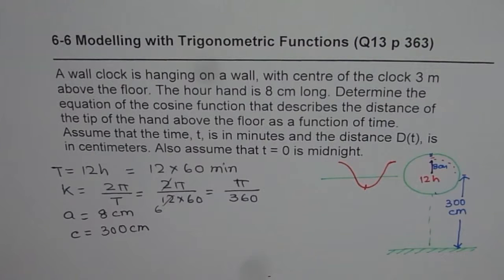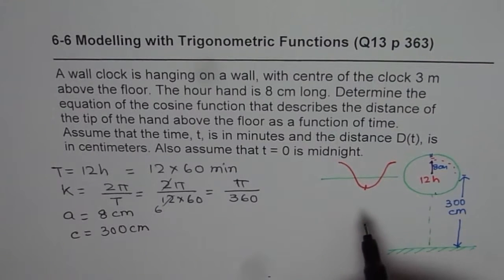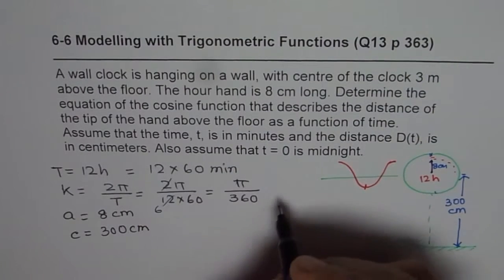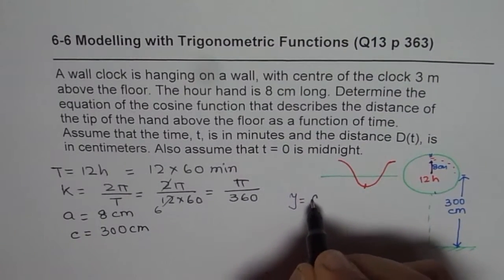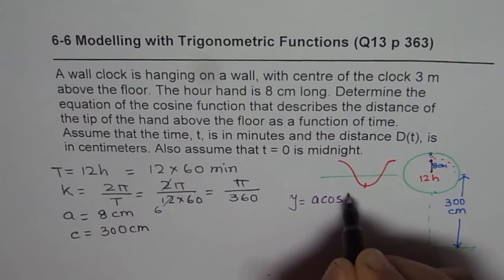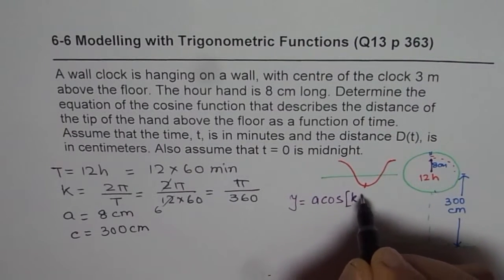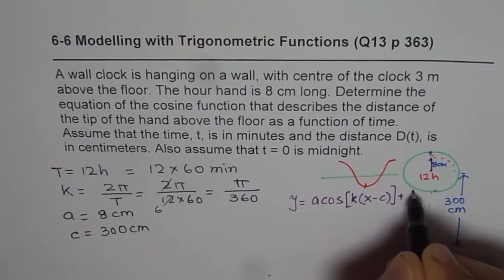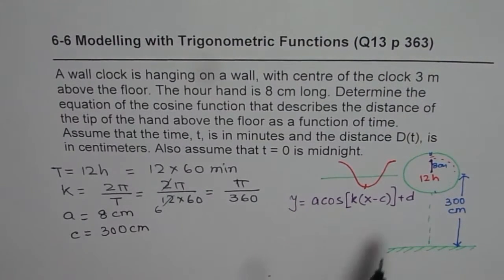So let me write down the transformed equation for the cosine function we are trying to develop. In general, the equation will be y equals a times cos of, within square brackets, k times x minus c plus d. Now this is what I mean.